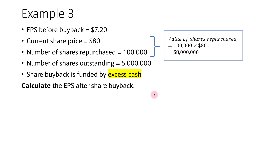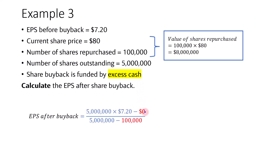In example 3, what if the share buyback is funded by excess cash? In other words, the company is not going to borrow money to buy back the shares — they will rely on their existing balance of cash, assuming there is at least $8 million available. In this case, there will be no additional interest expense from the share repurchase. So we take $36 million minus zero, divided by 4.9 million shares, giving us a higher EPS after buyback of $7.35.